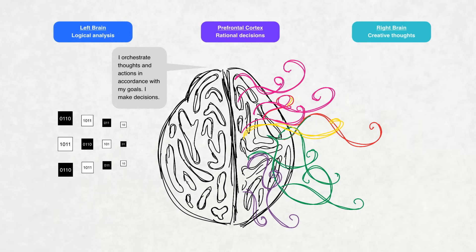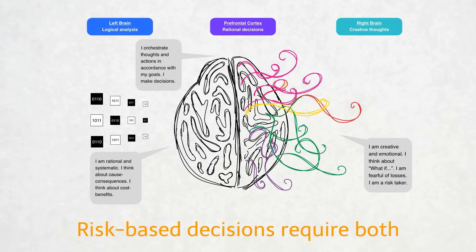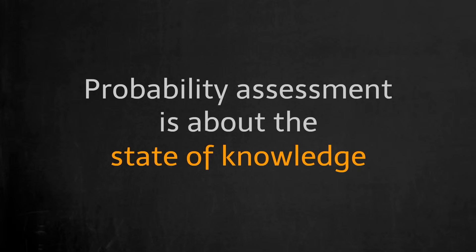When we think about the chance of an event, there are two sides. The first is mainly concerned with calculations, and the second is about subjective experiences and perceptions. Good risk-based decisions require both. Probability assessment is always about the state of knowledge. It's about what we know and our perception in the moment.